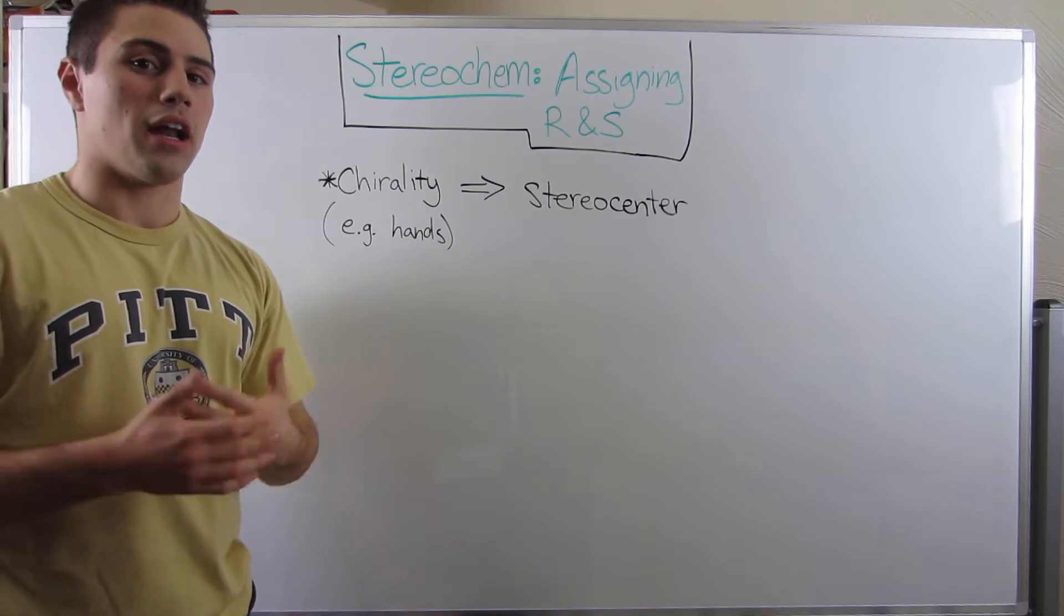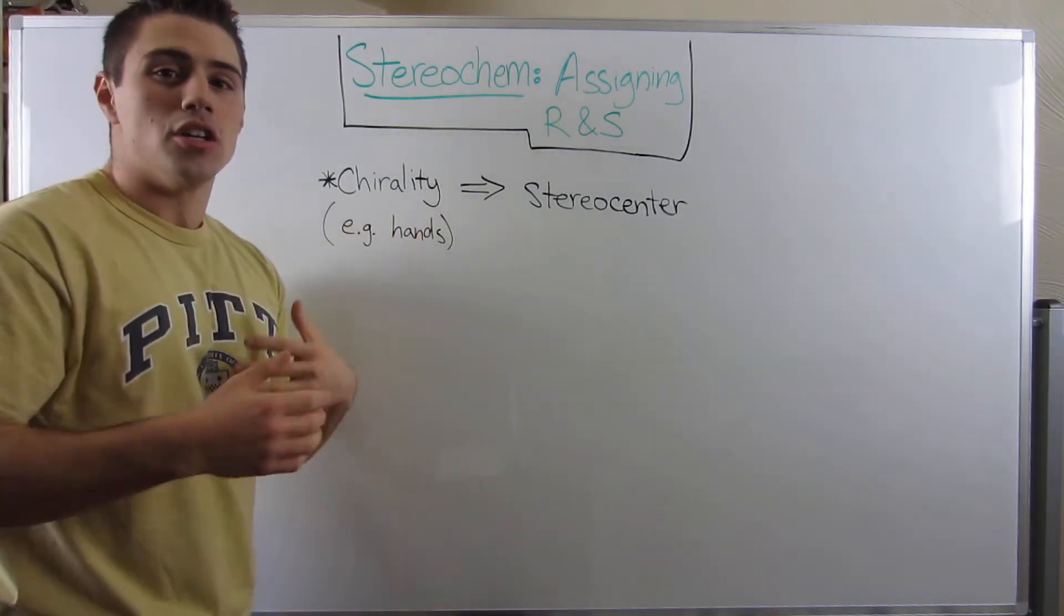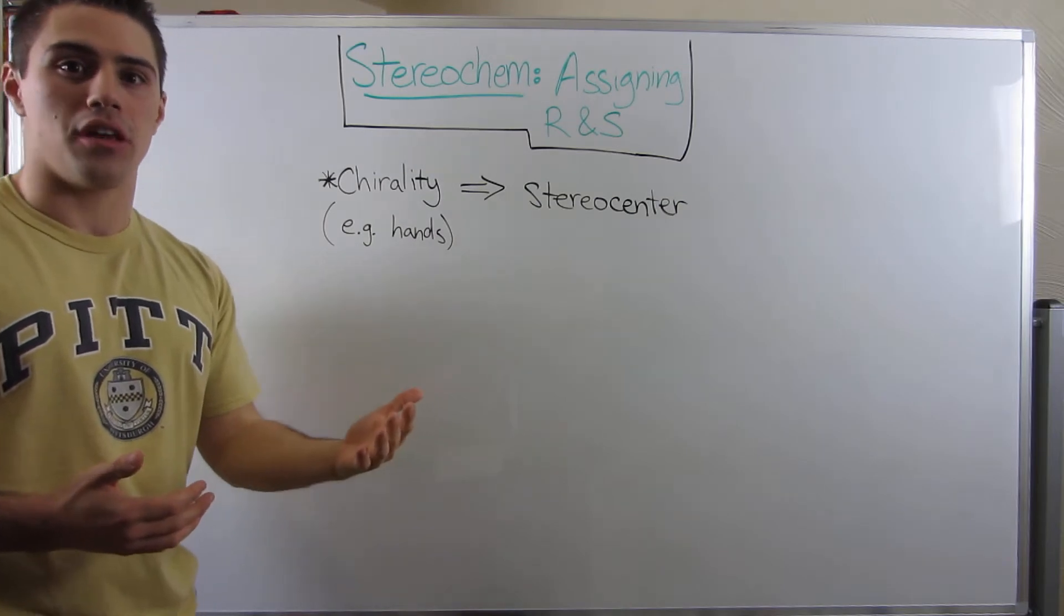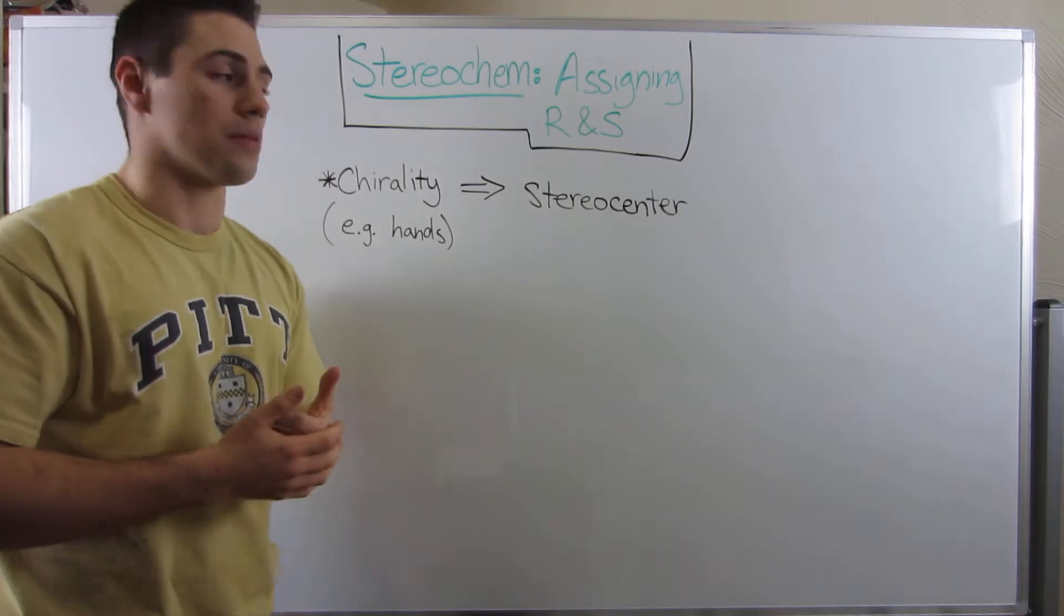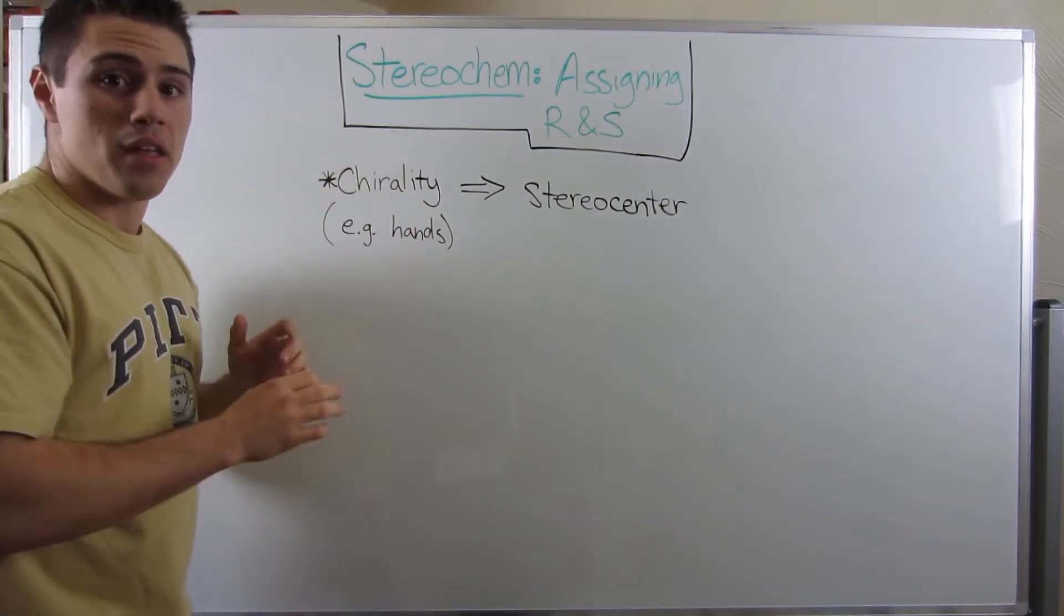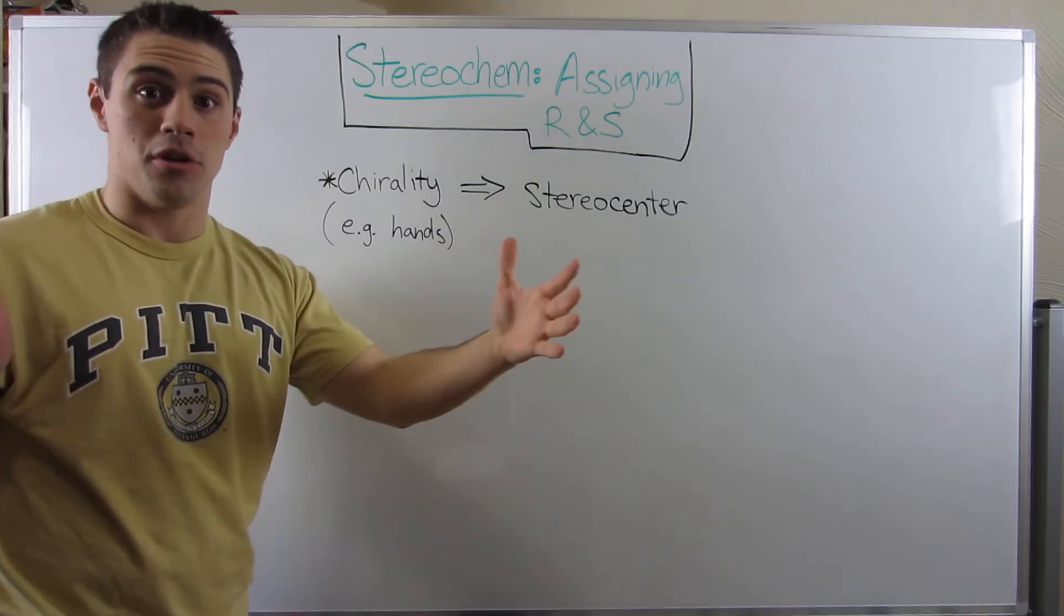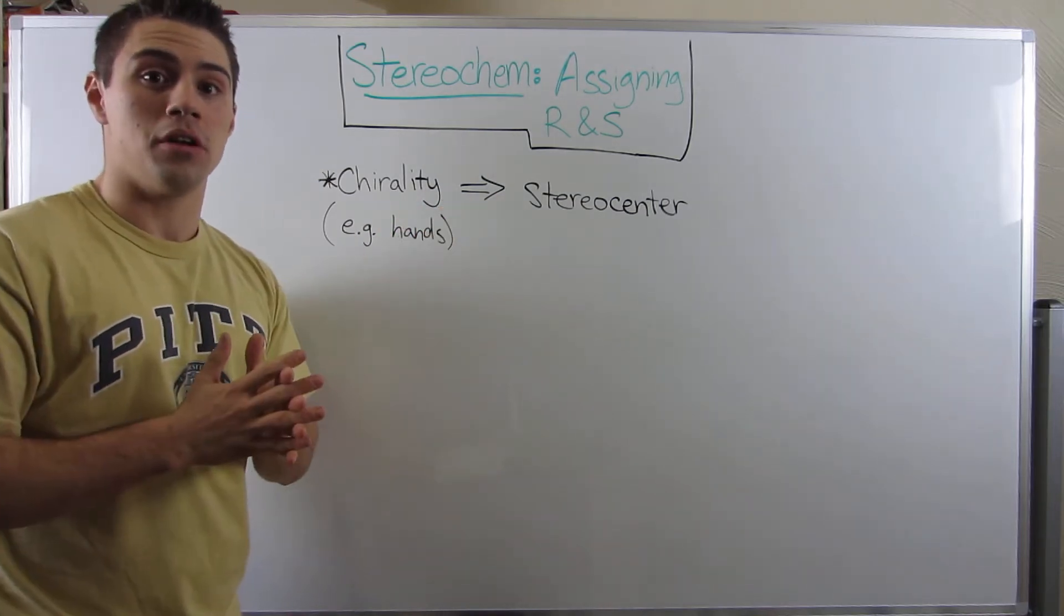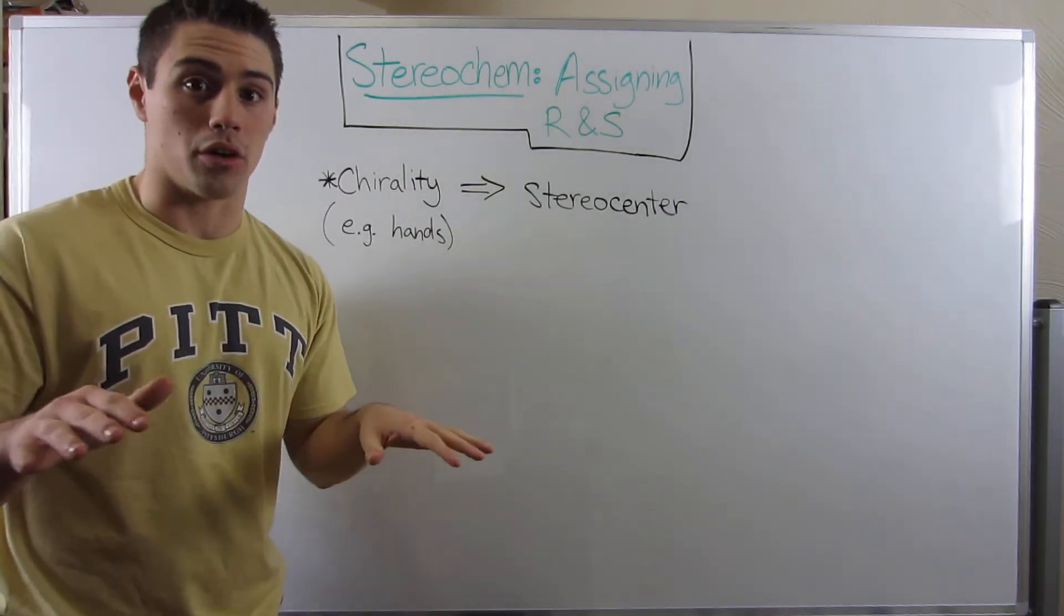So the first word I want to introduce is this word chirality. We kind of hinted at that in the last video, but we really didn't put a term to the definition we put out there. So to be chiral, what that means is that if you have something and you took its mirror image, if you tried to superimpose them, put them one on top of another, it wouldn't be superimposable. It would not work.